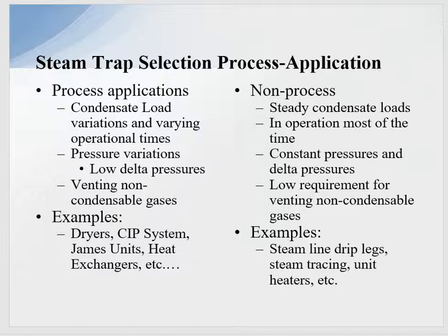Typically loads are always steady — might be 250 pounds per hour, might vary 75 to 100 pounds per hour, but not much variation. In operation most of the time, a lot of these units will stay in operation 365 days a year. This gives us a constant pressure and delta pressure, making it easier to select and size the steam trap. Low requirement for venting non-condensable gases because it's always in operation. Examples: steam line drip legs, steam tracing, uni-heaters.